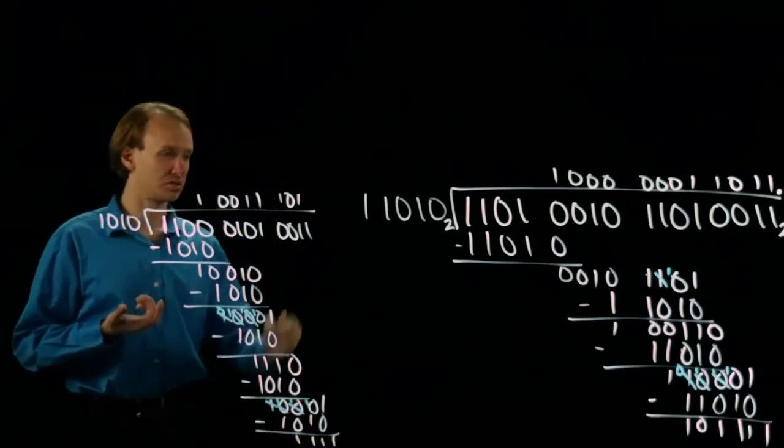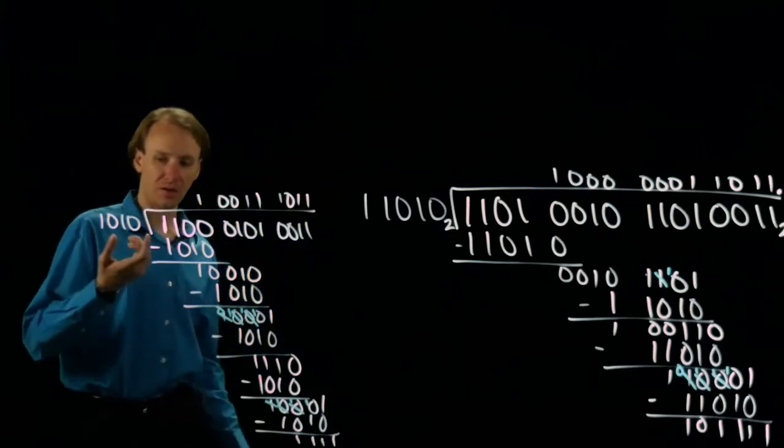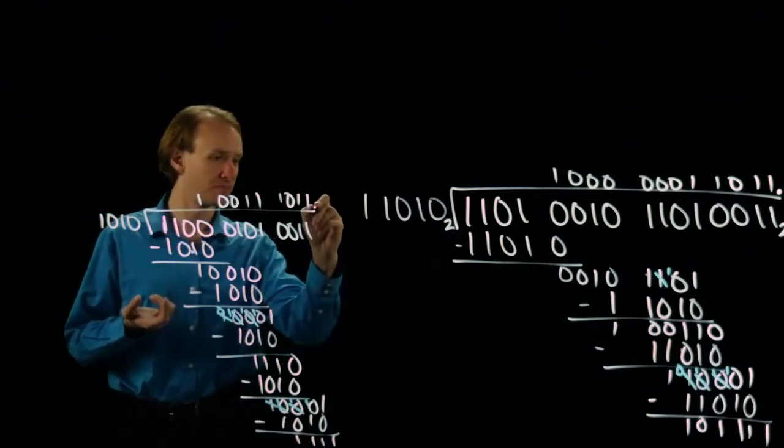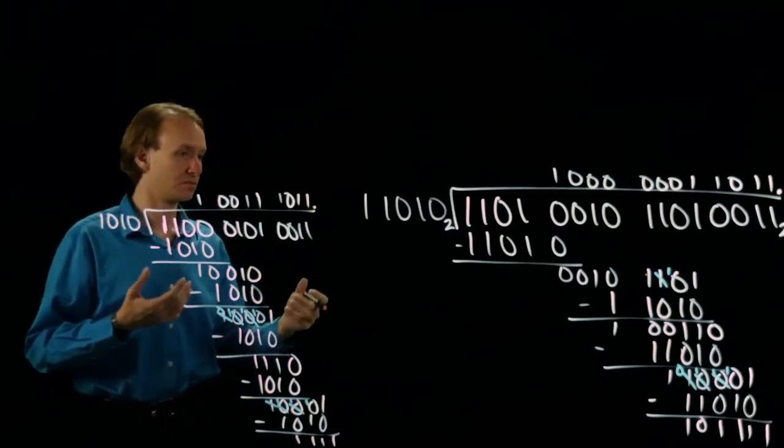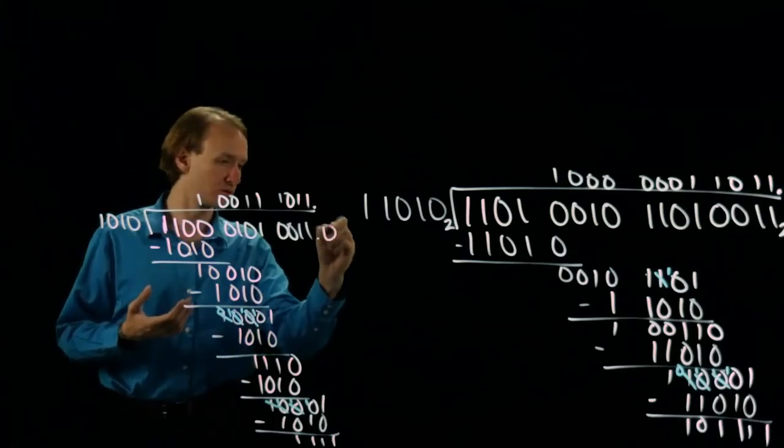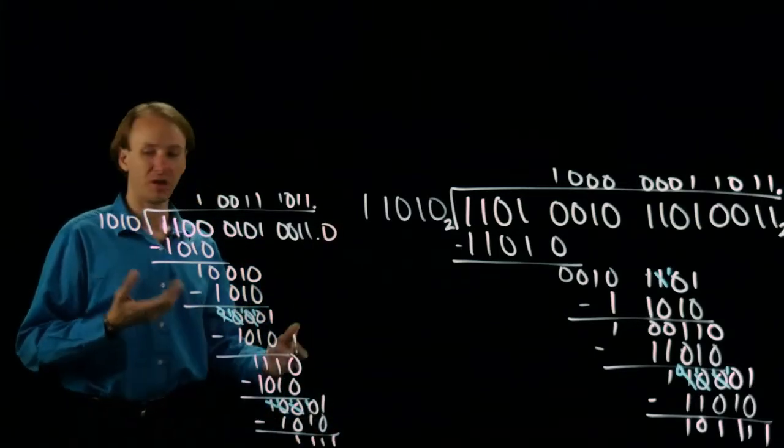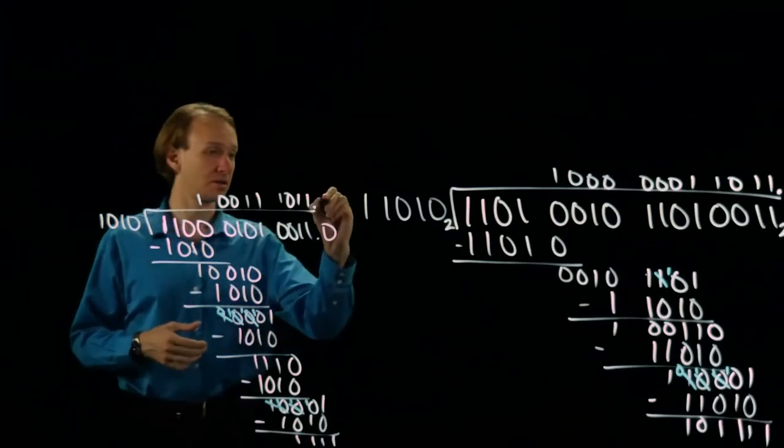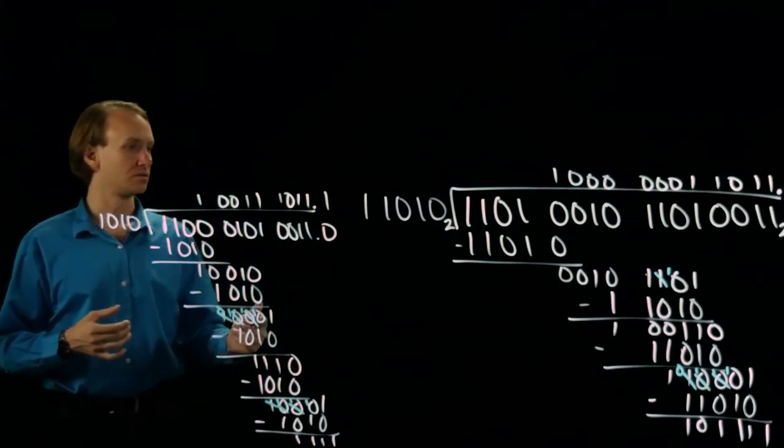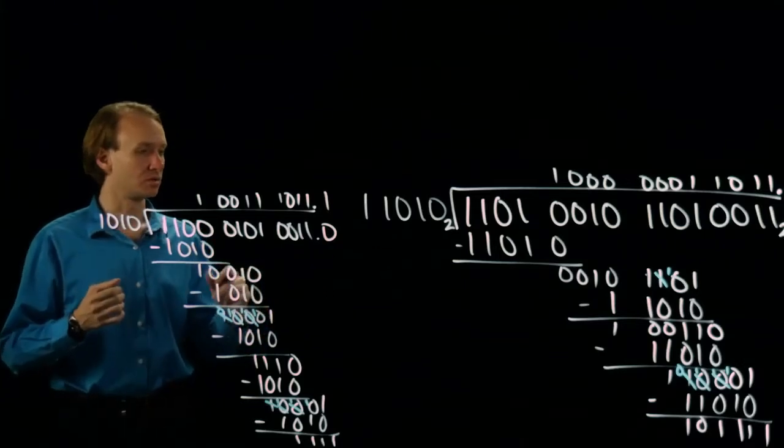And I'd have one more one I can pull down. I can certainly do the subtraction. That would leave me with one zero one afterwards. And then I could pull down another one bit. That would actually divide out cleanly. And I'd get a point one there with no remainder.